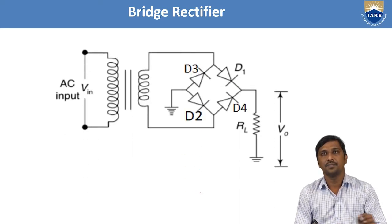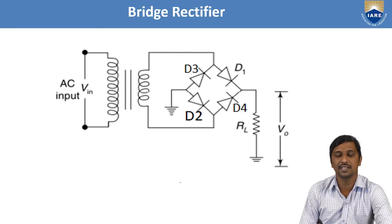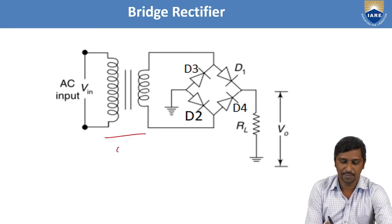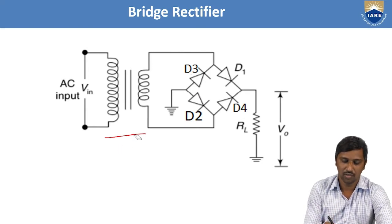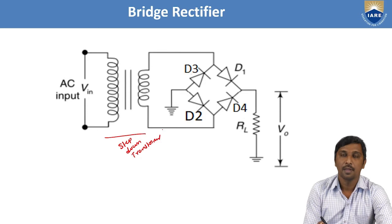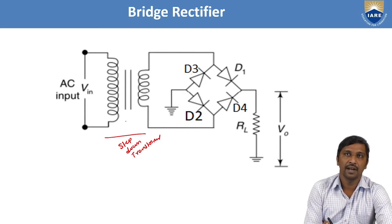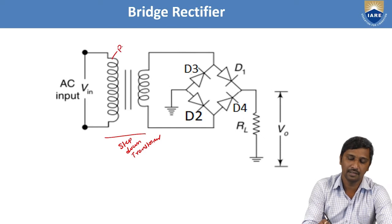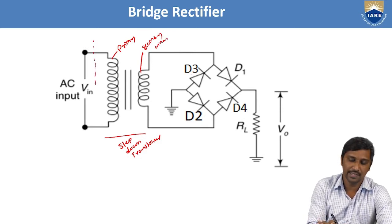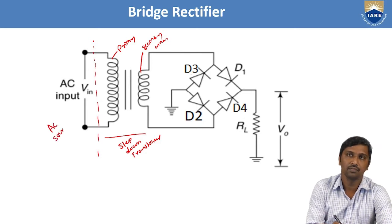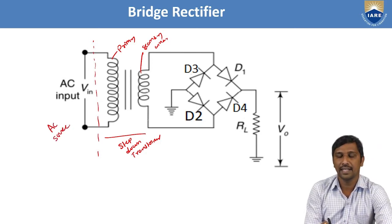Now let us consider the circuit diagram for a bridge rectifier. Here, this is a step-down transformer. It contains two windings: primary winding and secondary winding. For the primary winding side, we apply the AC source. Across the secondary winding, the signal passes to the bridge rectifier circuit.